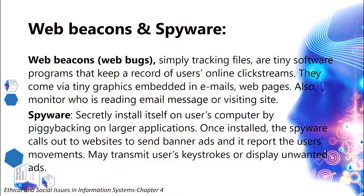Web beacons, also known as web bugs, are tiny tracking files — tiny software programs that keep a record of users' online click streams. They come via tiny graphics embedded in emails and web pages, and also monitor who is reading an email message or visiting a site. Spyware secretly installs itself on users' computers by piggybacking on larger applications. Once installed, spyware calls out to websites to send banner ads and reports the users' movements. It may also transmit users' keystrokes or display unwanted ads.